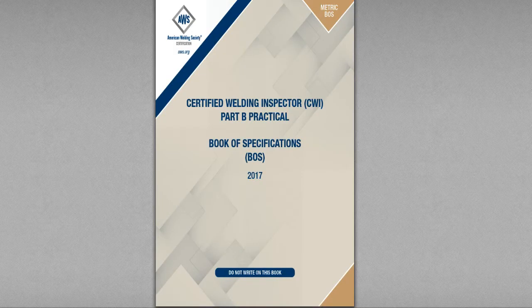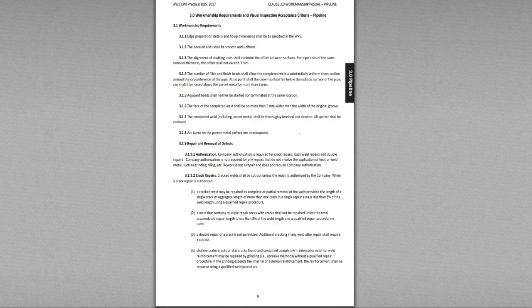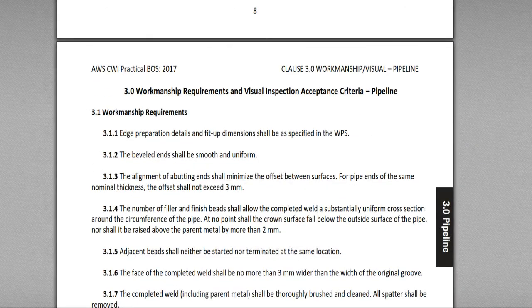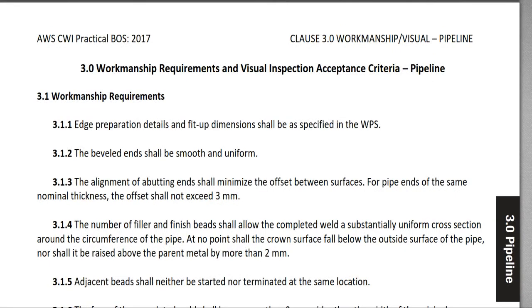Hello, welcome to CWI Part B Practical Book of Specification (BOS) Lecture. This is Lecture 9. Today I'm going to give a lecture about Chapter 3. The title of Chapter 3 is Workmanship Requirements and Visual Inspection Acceptance Criteria for Pipeline.